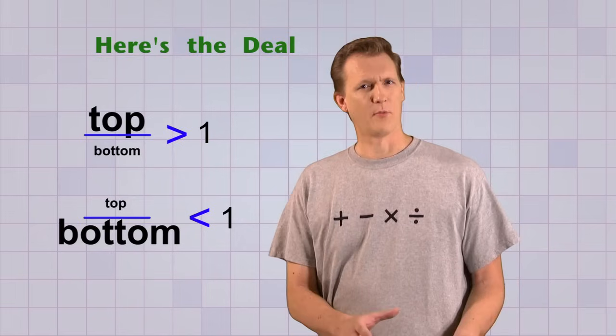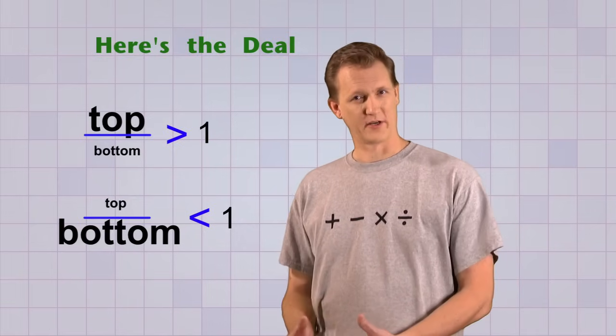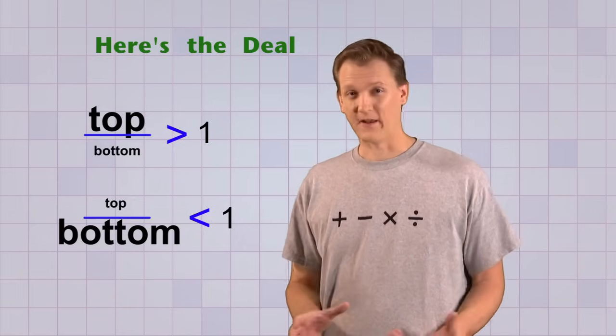But if we divide a smaller number by a bigger number and get a value that's smaller than 1, then how are we going to write that down like a regular number? Isn't 1 the smallest number we can write? Well, besides 0. Luckily, the answer is no. We can write values that are smaller than 1 by using something called decimal numbers.